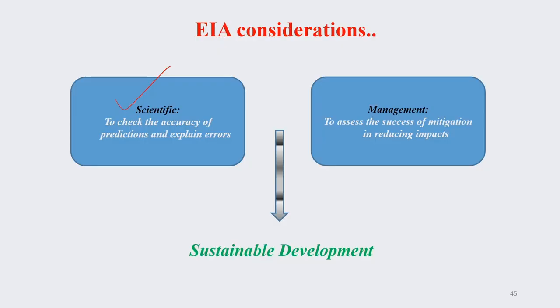The considerations are mainly two sets. One is scientific consideration, where we need to check the accuracy of prediction and also explain errors — accuracy of information, data analysis, and minimizing error. The second is management consideration, where we assess the success of mitigation in reducing impact — looking at mitigation plans, their implementation, and how successful they are in reducing environmental impact.